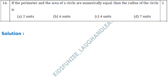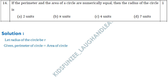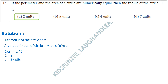Question 14: If the perimeter and the area of a circle are numerically equal, what is the radius? Let the radius be r. Perimeter of circle = 2πr, and area of circle = πr². Setting them equal: 2πr = πr². π cancels, r cancels: 2 = r. So radius = 2 units, which is option A.